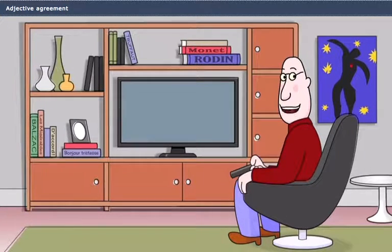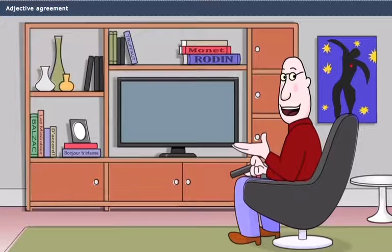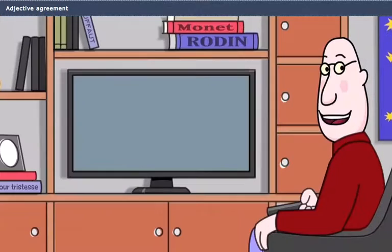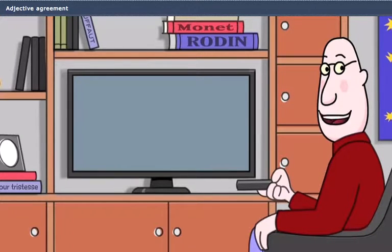Okay. In this final group, the masculine and feminine forms are not only pronounced exactly alike, but they're also spelled exactly alike. That's because the masculine form of the adjective already ends in an unaccented e, so there's no need to add another one to form the feminine.